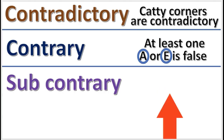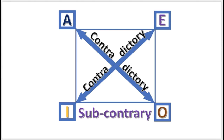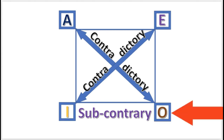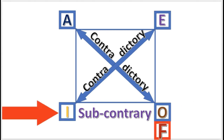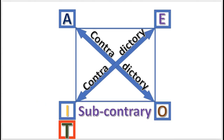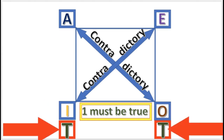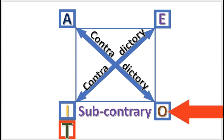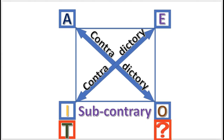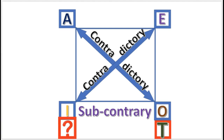Subcontrary is next. The subcontrary rule says: at least one of the I or O propositions is true. For example, if I is false, then O must be true. If O is false, then I is true — at least one must be true. However, if I is given as true, then O has undetermined truth value, because they could both be true. Since I is already true, O could be true or false — it's undetermined. And likewise, if O is true, then I has undetermined truth value.